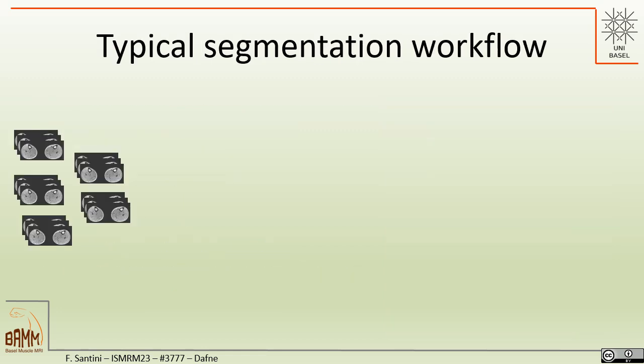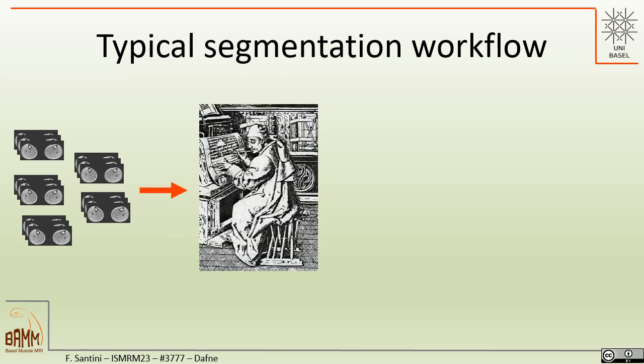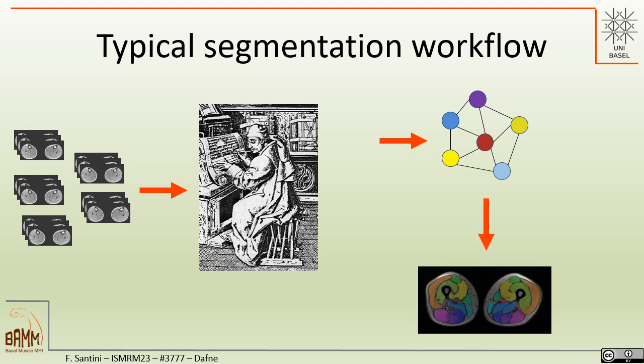Typically, to perform segmentation, a large number of datasets is collected, which is then annotated by a person. These annotations and data are used to create a model, which is then deployed and applied to new segmentation tasks. This has a disadvantage in that the model is only as good as the data it has as input, and it is static and cannot adapt to new input information.